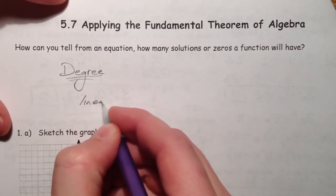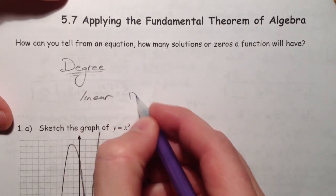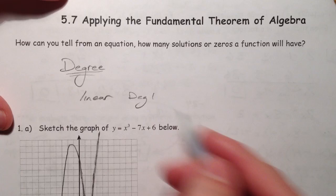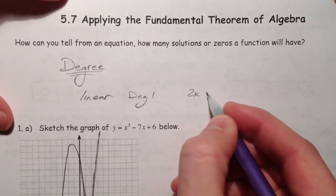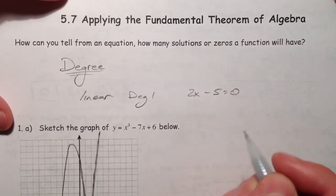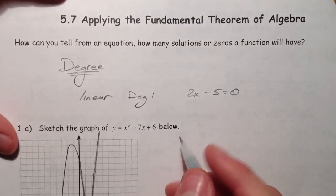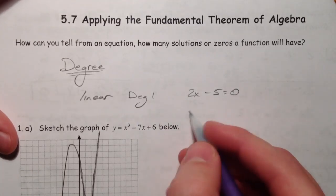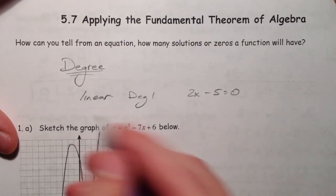a linear function has degree 1, and it has one solution, 2x minus 5 equal to 0. Or, in the same way, y equals 2x minus 5 has one x-intercept.